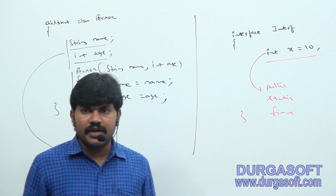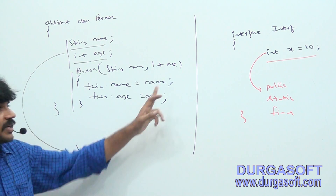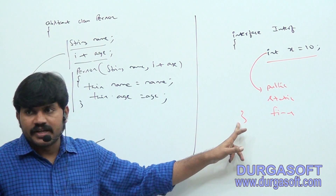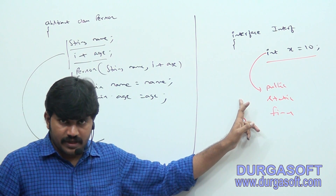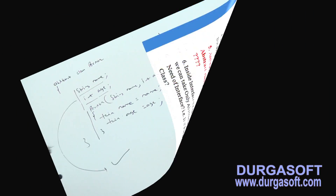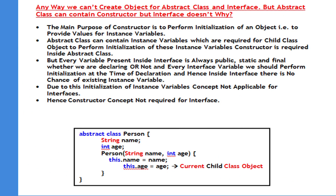I hope you people can understand. Abstract class can contain a constructor, but interface doesn't. What is the reason for that? I hope you can understand clearly. That's all. Thank you.